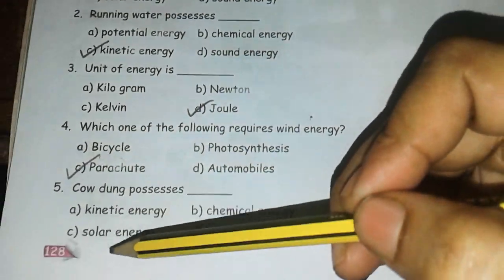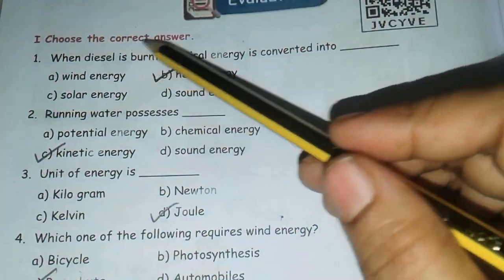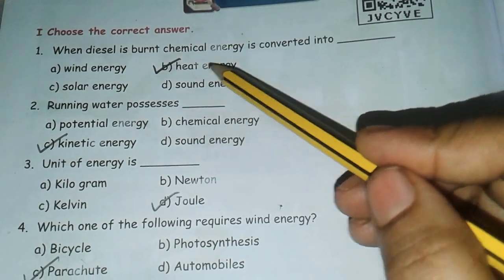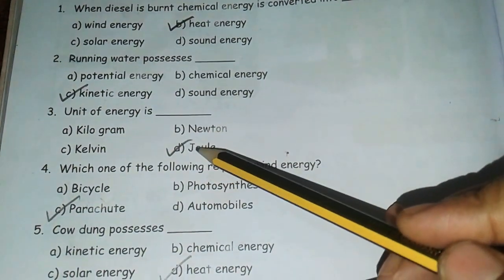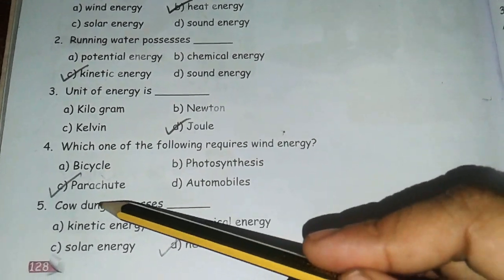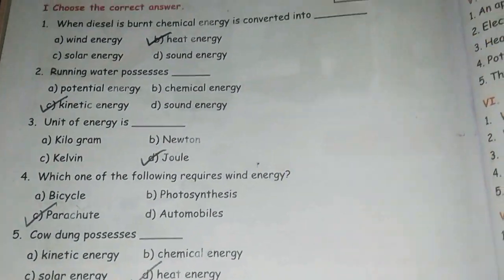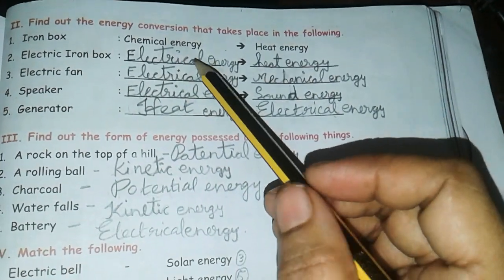Choose the correct answer from page number 128. First one: B answer, heat energy. Second one: C answer. Third one: D. Fourth one: C. Fifth one: D. Next, second roman numeral, find out the energy conversion that takes place in the following.